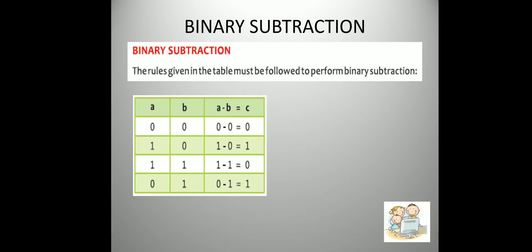In the same way, binary subtraction. Binary addition and binary subtraction both have some logical concept. In binary addition, the one thing you have to remember is that 1 plus 1 is 10. 1 plus 1 is 2, but we represent 2 in binary as 10. When you convert 2 to binary you get 10 as the answer — that's why we write 10. Don't read it as ten; this is 1 and 0. If you read 10 as ten, it will be decimal.